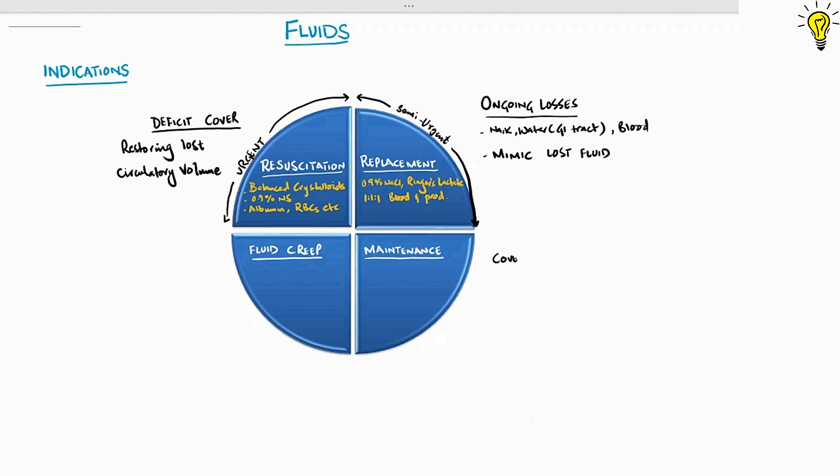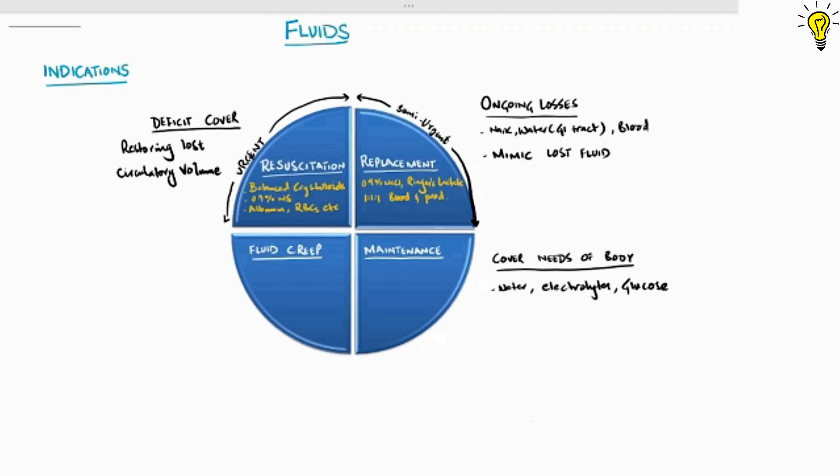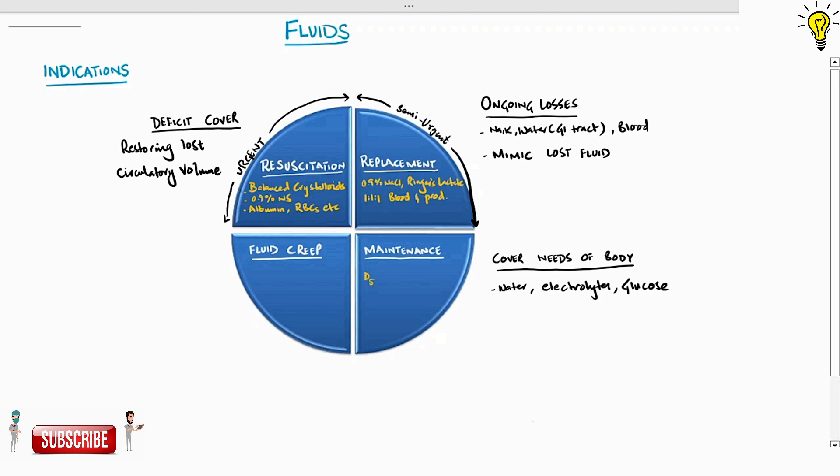The third category is maintenance fluids, the fluid covering the maintenance requirements of body, including water, electrolytes and glucose to support basic requirements for normal functioning at cellular level. We discussed in last episode on dextrose-based crystalloids used in maintenance fluids.